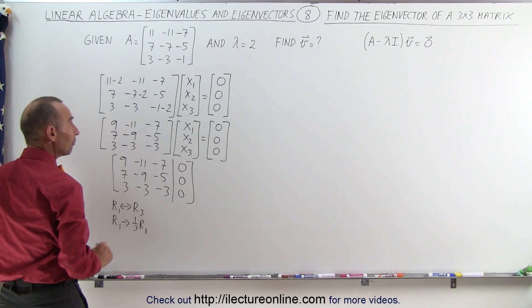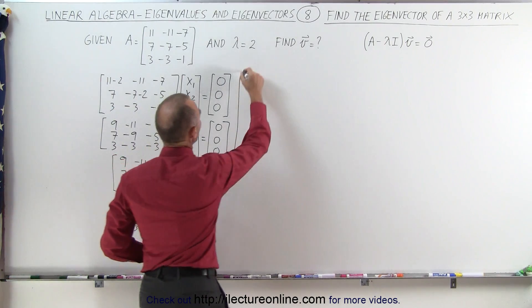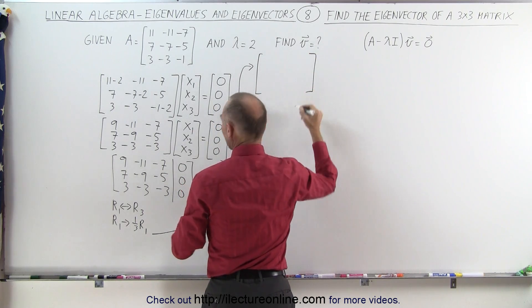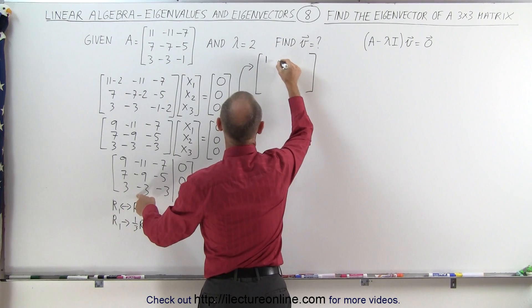And if we do that, we get the following matrix. Let's see. Can I squeeze it in there? Let me go up here. We got more room. So when I do that in the top, I end up with this row but divided by 3. So this becomes a 1, a minus 1, a minus 1, and that's still 0.